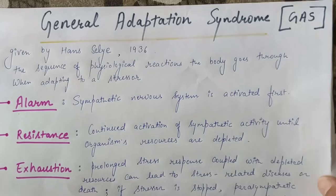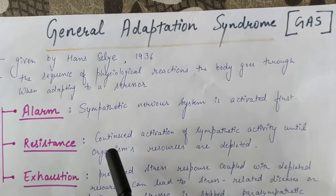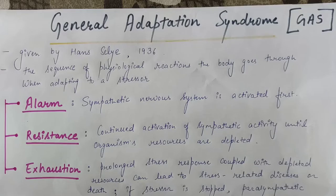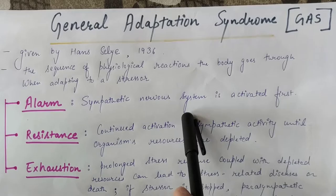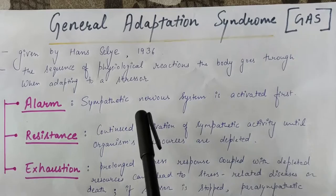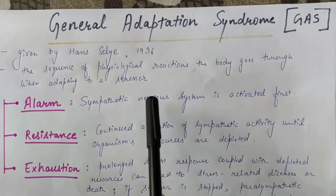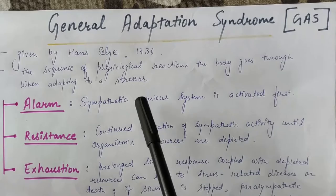There are three stages: the alarm stage, the resistance stage, and the exhaustion stage. First, when we face any stressor or stressful situation, our sympathetic nervous system activates. The sympathetic nervous system activates during fight-or-flight situations, and stored energy during stressful situations helps us. So the first stage is the alarm stage, where the sympathetic nervous system activates.